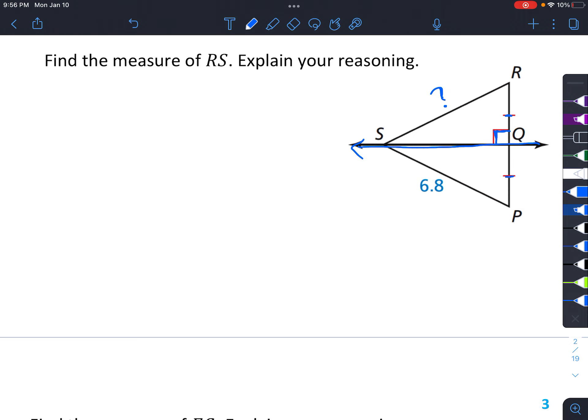And according to our theorem, if we have a point on a perpendicular bisector, then the distances are the same. So this distance is the same as this distance, which means we can find RS pretty easily, right? So RS has to be the same as SP, which is 6.8.